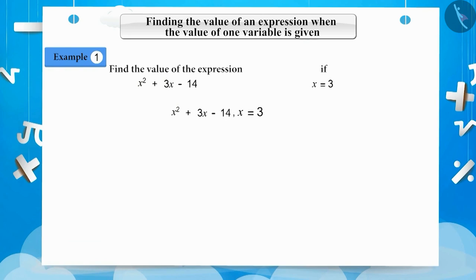We substitute x equals 3 in the given equation. On doing so, x² becomes 3² and 3x becomes 3 multiplied by 3. Now, our expression becomes 3² + 3 × 3 - 14. 3² is 3 × 3 equals 9, and 3 × 3 is 9.